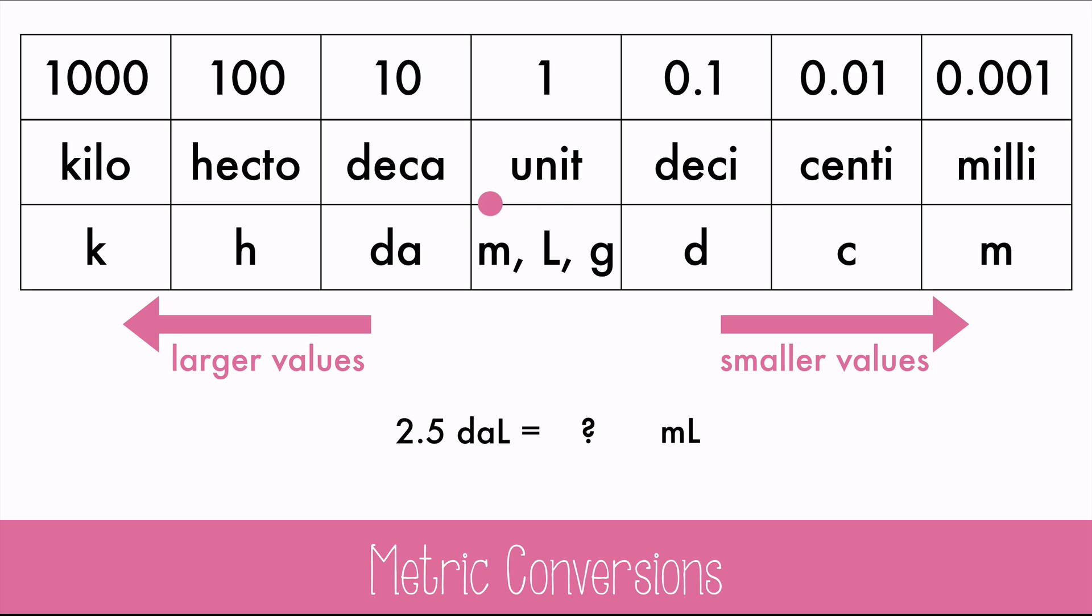Start with deca, and move it to the right until you get to milli, one, two, three, four times. So move the decimal, one, two, three, four places, to the right, and you get 25,000 milliliters.